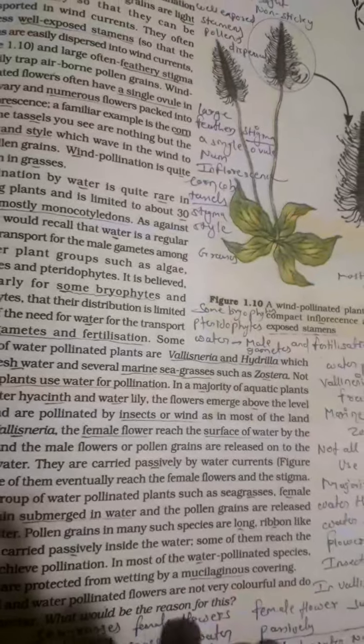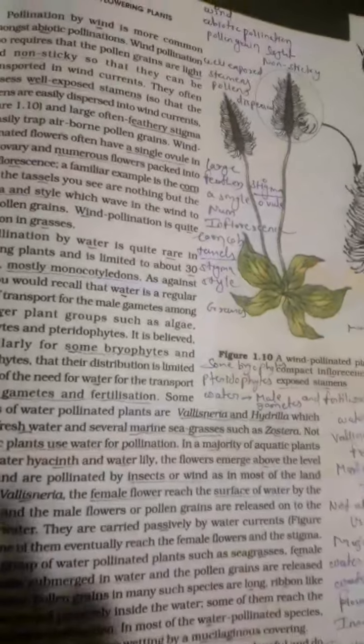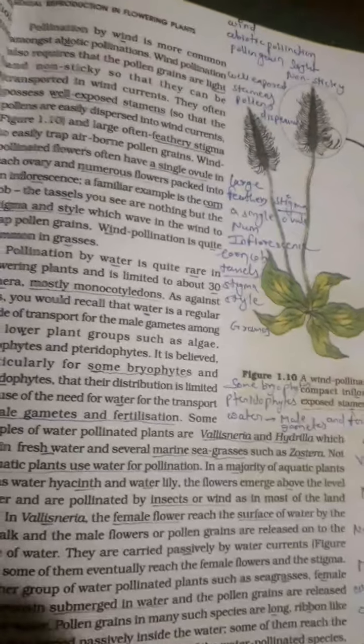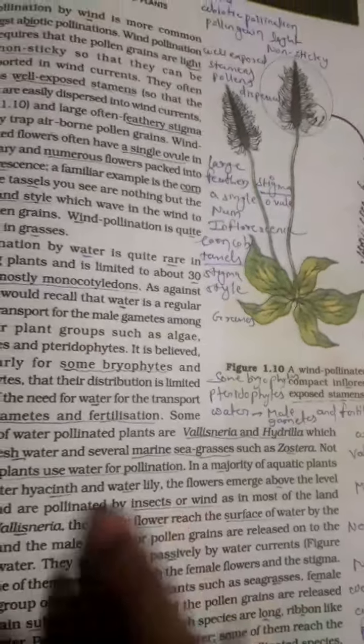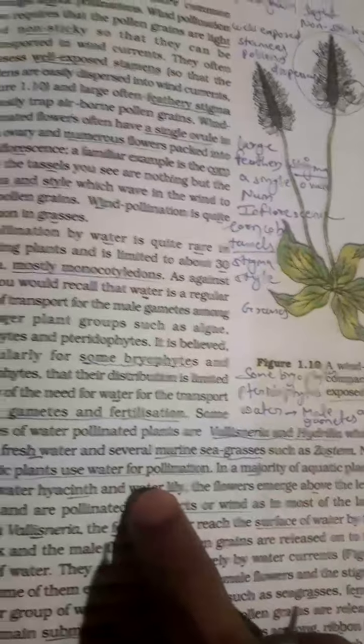Remember this point. And one more thing is water lily and hyacinth - pollinated by insect and wind, not by water. Insect and wind, hyacinth and water lily.